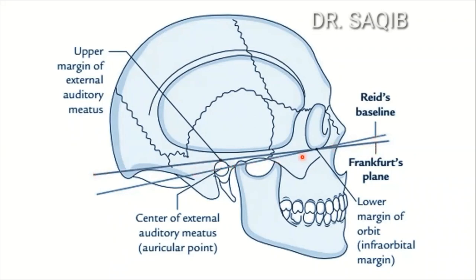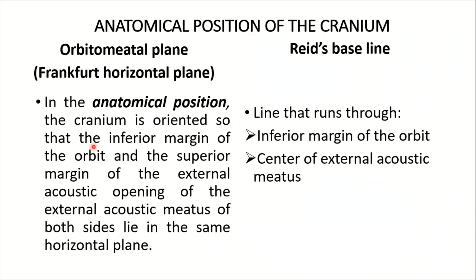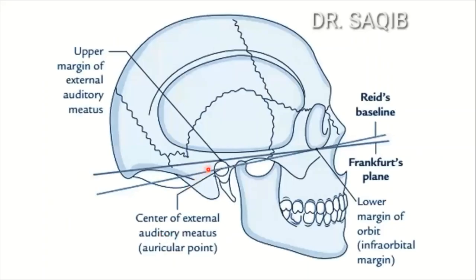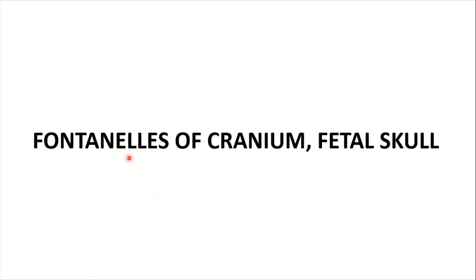The Frankfurt plane has the inferior margin of the orbit and the superior margin of the external acoustic meatus on both sides lying in the same horizontal plane. The Reid's base line passes through the same infraorbital margin but is traced back through the center of the external auditory meatus — the auricular point — going backwards to the occipital bone.